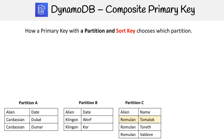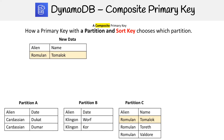Now we're going to take a look at how a primary key with a partition and a sort key chooses which partition it should write data to. A partition and sort key is known as a composite primary key, so we're going to need some data.